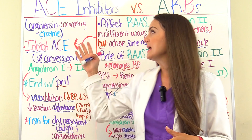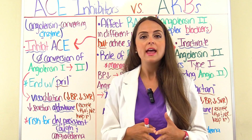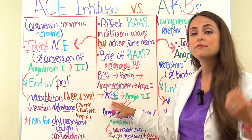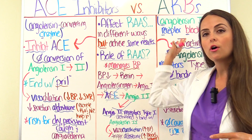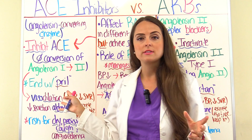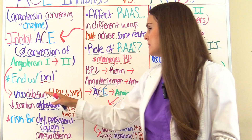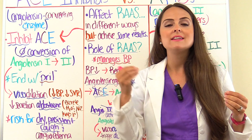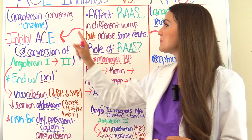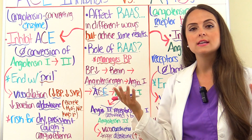With ACE inhibitors, some patients — not all — can develop a persistent, nagging, dry cough. The reason for that is because of how the ACE inhibitor influences the ACE enzyme. Normally, ACE will inactivate a substance called bradykinin, which is an inflammatory substance. But if we're blocking ACE with an ACE inhibitor, we're not going to be inactivating this bradykinin, so it can increase and cause this coughing.